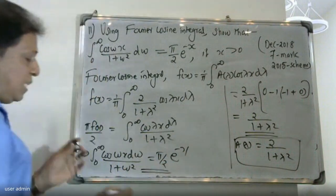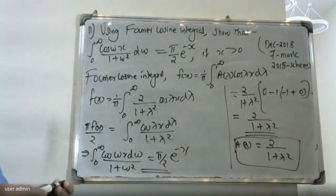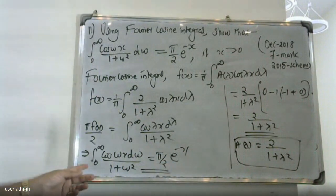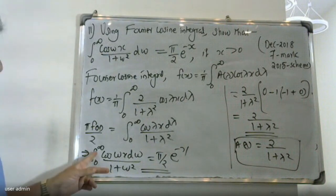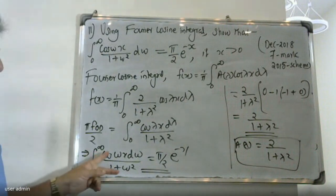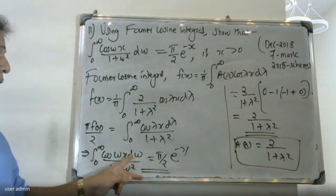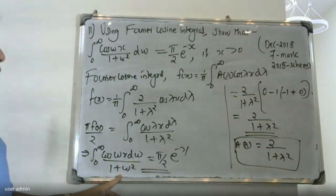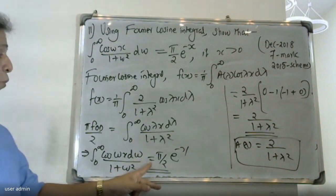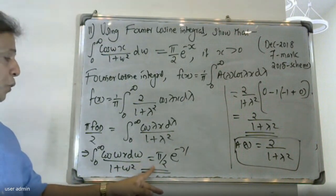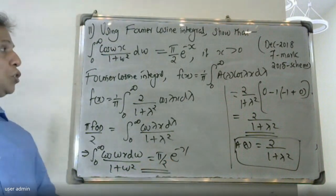We have shown that ∫₀^∞ cos(ωx)/(1 + ω²) dω = π/2 · e^(-x), which was the required Fourier cosine integral to prove.